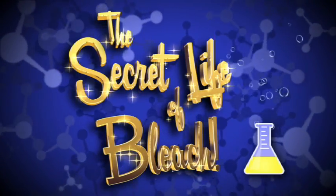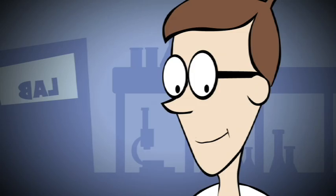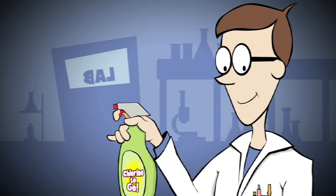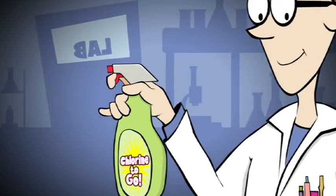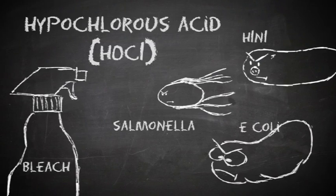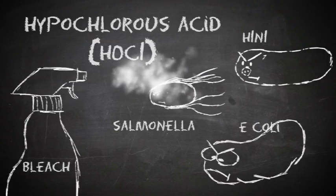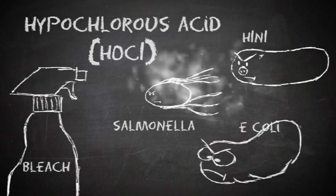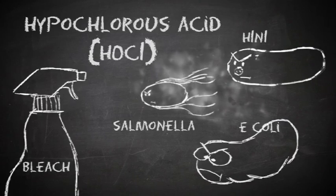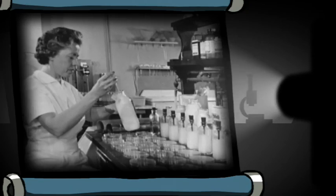The secret life of bleach. You know bleach as an all-purpose disinfectant — all the germ-busting power of chlorine in a handy container. Bleach unleashes a form of chlorine that is a major problem for germs like E. coli, salmonella, and flu viruses.